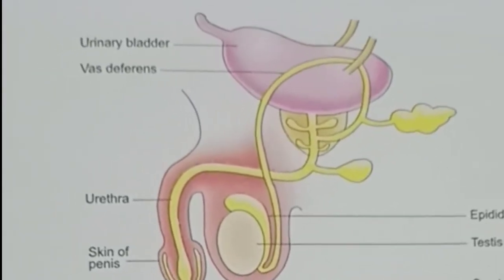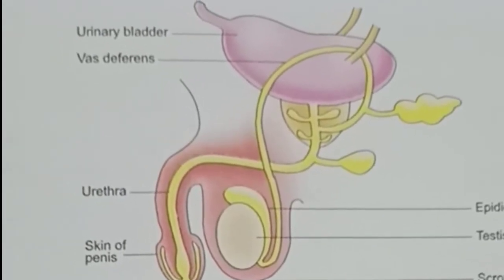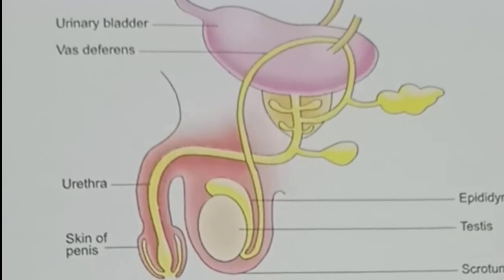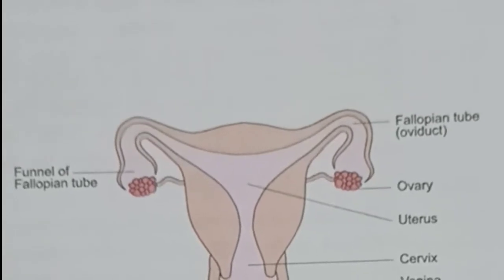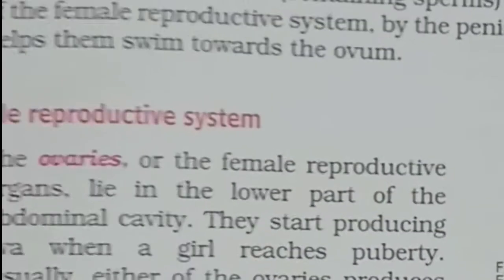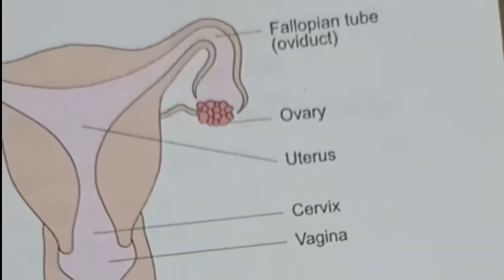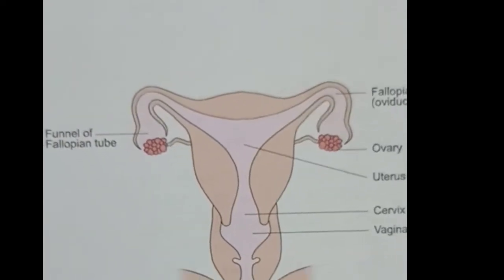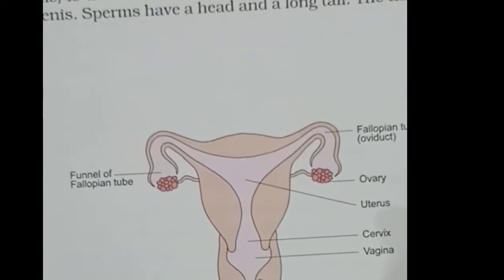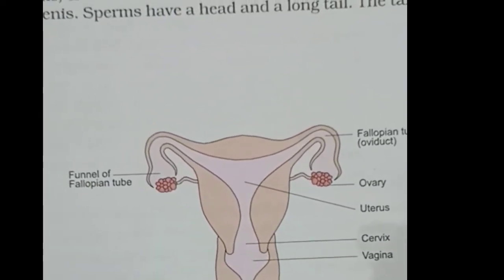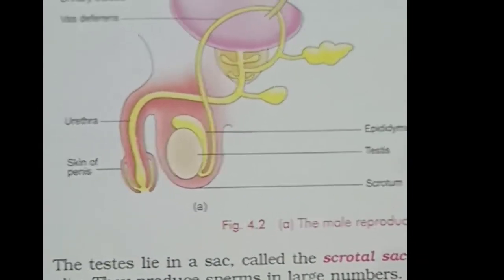In the female's reproductive organ, there is an egg, and the male gamete sperm and the female egg fuse so that fertilization takes place. The female reproductive system consists of ovaries, fallopian tubes, uterus, and vagina. The male reproductive system consists of testes, vas deferens, epididymis, penis, and some glands.